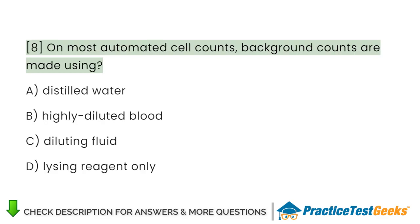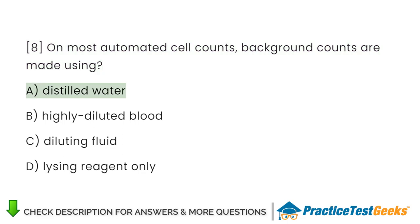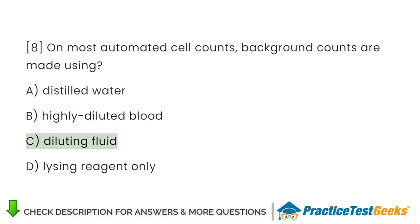On most automated cell counts, background counts are made using: A. Distilled water. B. Highly diluted blood. C. Diluting fluid. D. Lysine reagent only.